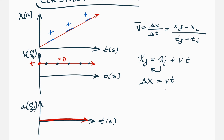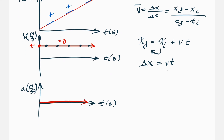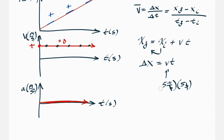For example, if an object moves at a constant velocity of 5 meters per second for 5 seconds, then 5 meters per second times 5 seconds equals 25 meters. The seconds cancel out and you're left with delta x equals 25 meters.